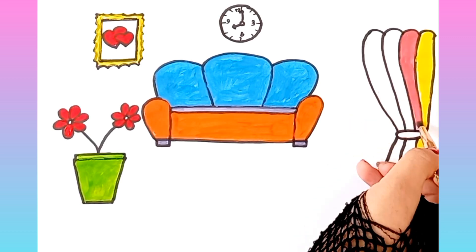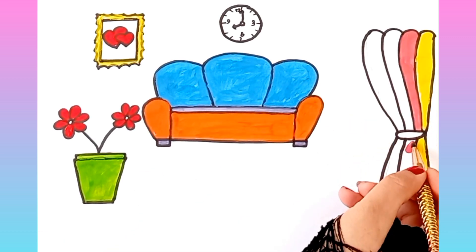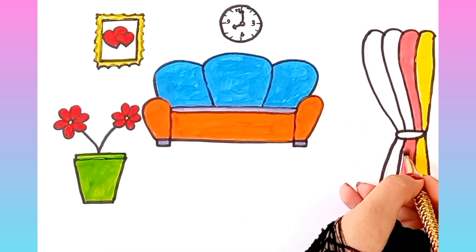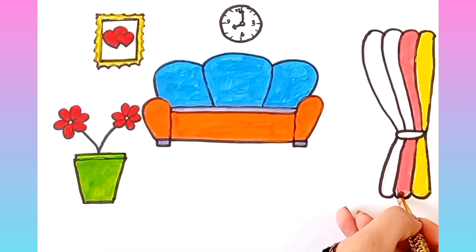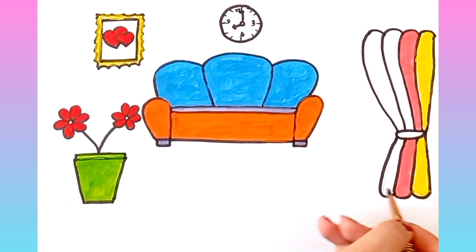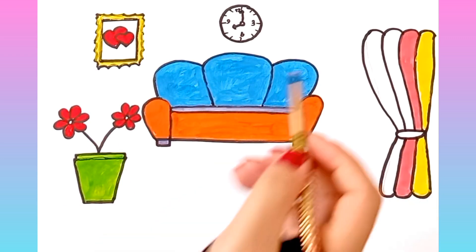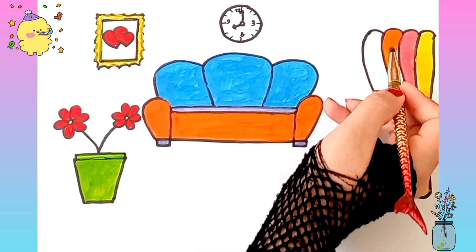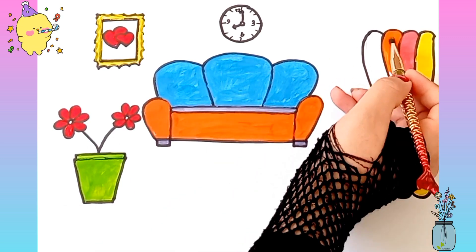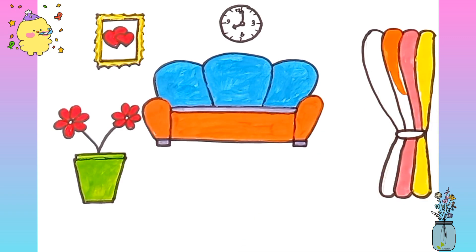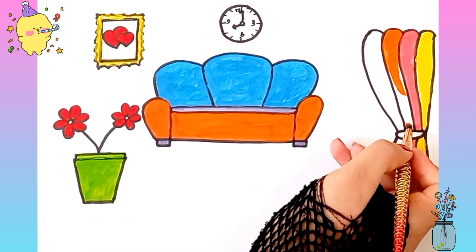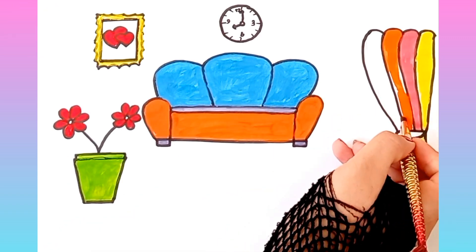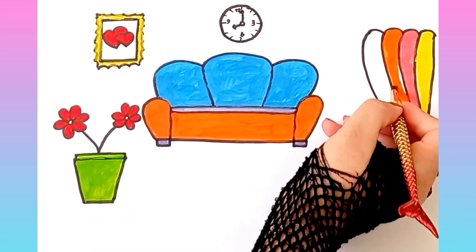S is for sun, s, s, sun. T is for toad, t, t, toad. U is for umbrella, u, u, umbrella.